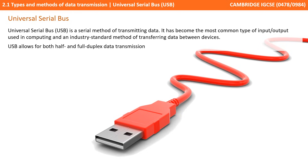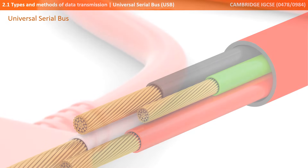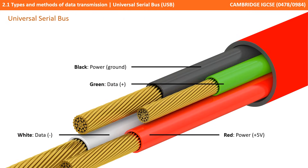USB allows for both half duplex and full duplex data transmission. If we take a look inside a USB cable, we'll actually find four separate shielded cables. We have a black and a red cable related to power, and then a green and a white cable which allow us to send data in two separate directions.